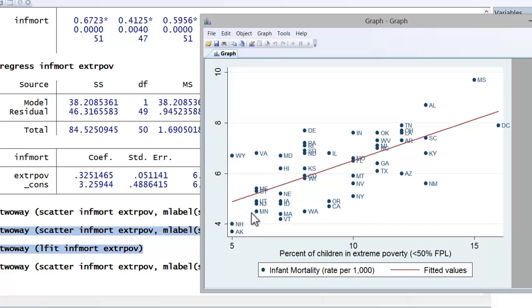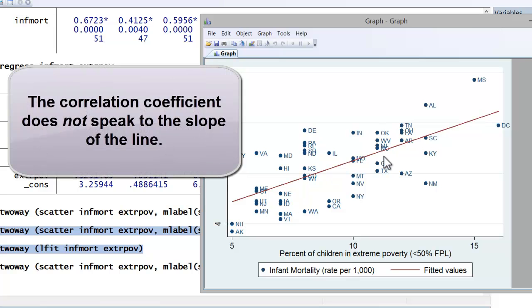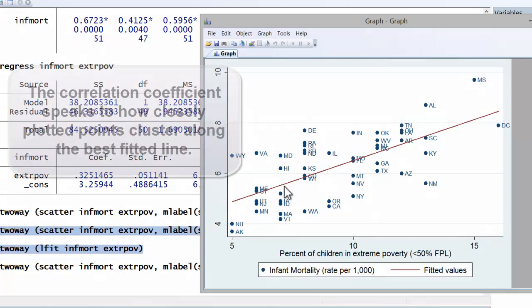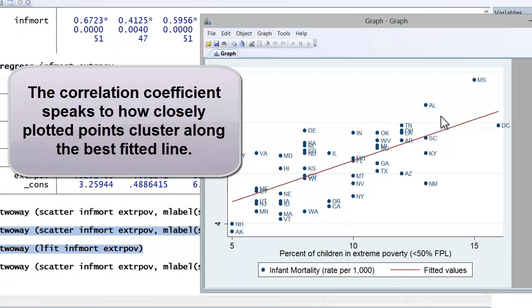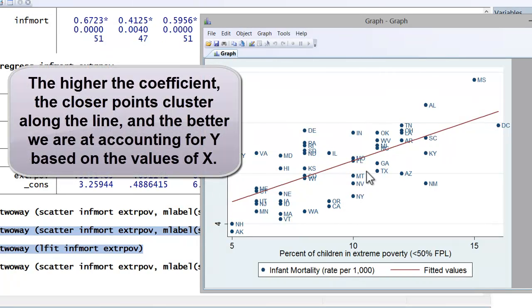Now it's important to keep in mind what the correlation coefficient does and does not mean. The correlation coefficient has absolutely nothing to do with the slope or the steepness of the relationship. Rather, it has to do with how closely the plotted points cluster around the best fitted line. The closer they cluster to the best fitted line, the larger the correlation coefficient, either positive or negative.